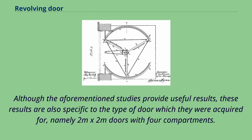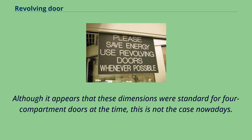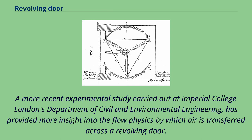Although the aforementioned studies provide useful results, these results are also specific to the type of door for which they were acquired, namely two meters by two meters doors with four compartments. Although it appears that these dimensions were standard for four-compartment doors at the time, this is not the case nowadays. A more recent experimental study carried out at Imperial College London's Department of Civil and Environmental Engineering has provided more insight into the flow physics by which air is transferred across a revolving door.